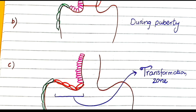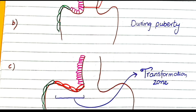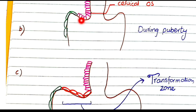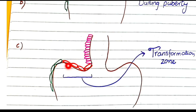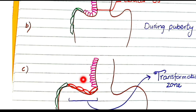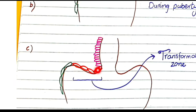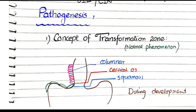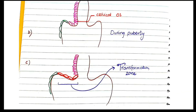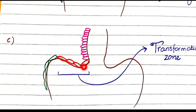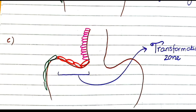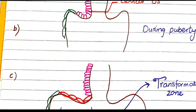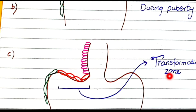After puberty, with each passing year, the columnar cells present at the level of the ectocervix undergo metaplasia and transform into squamous cells. This development of metaplastic squamous cells is called transformation, and the area where this transformation happens is called the transformation zone. These squamous cells differ from the original squamous cells in that they have developed via metaplasia from columnar cells.